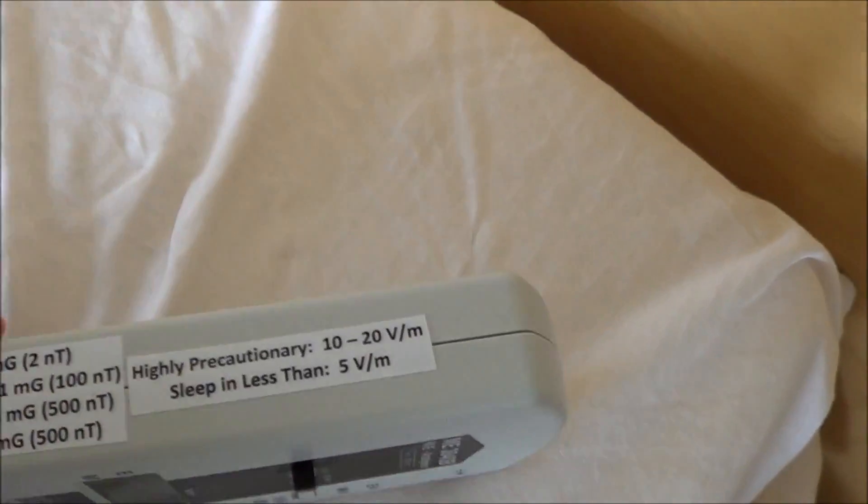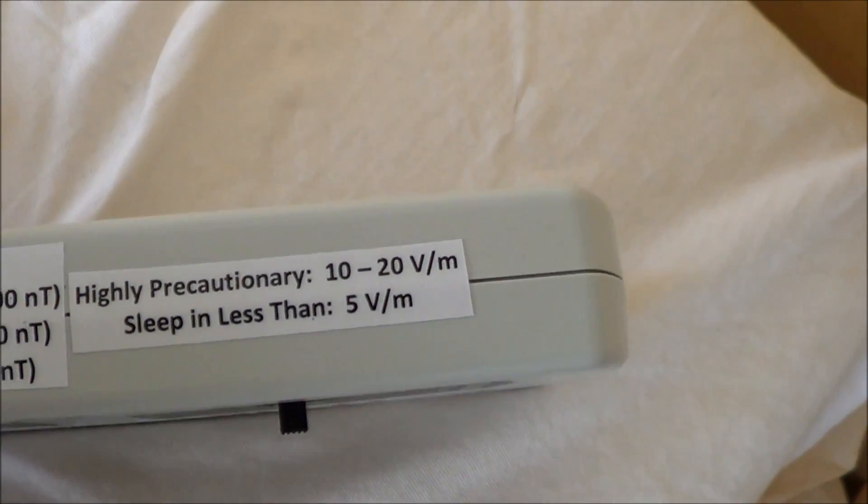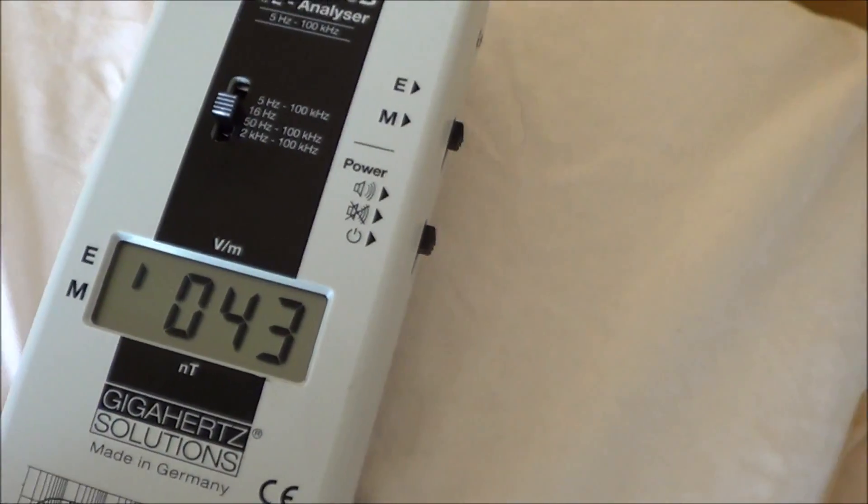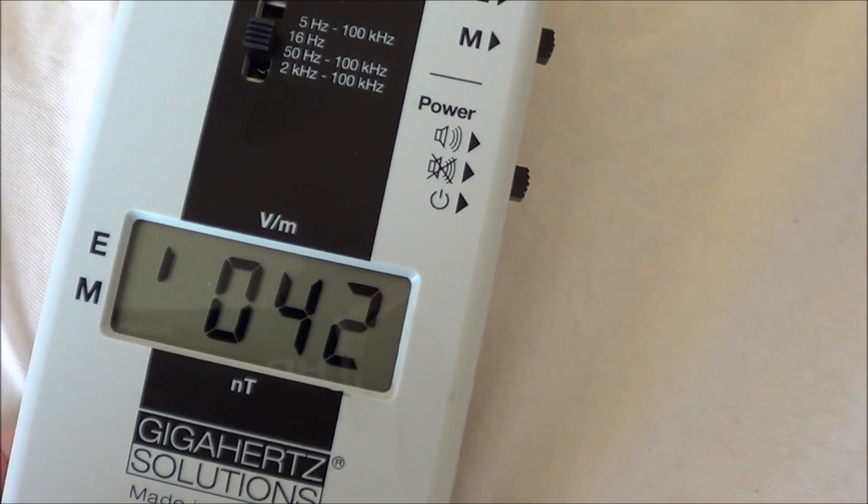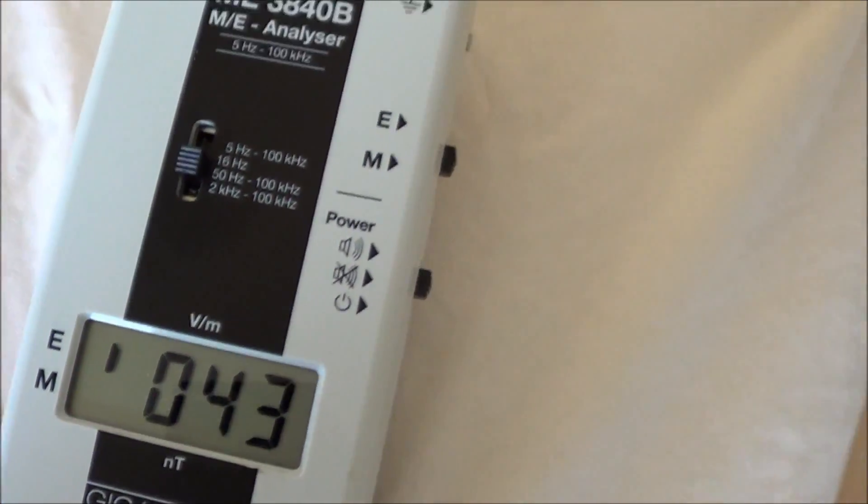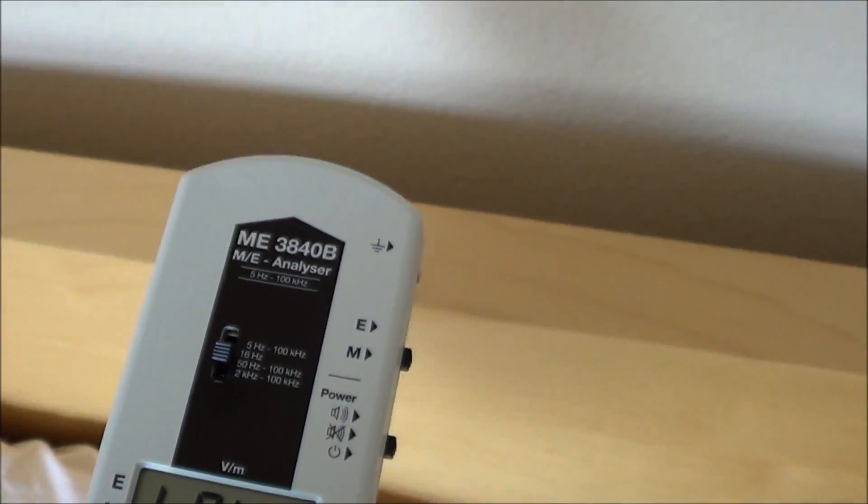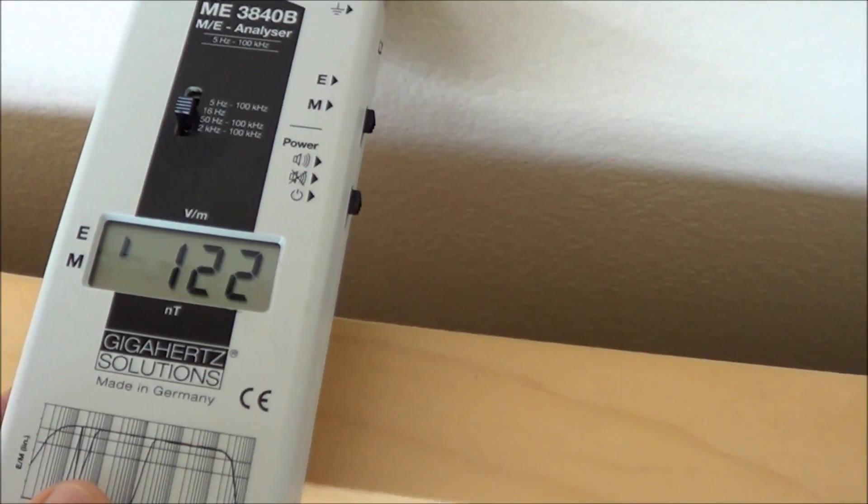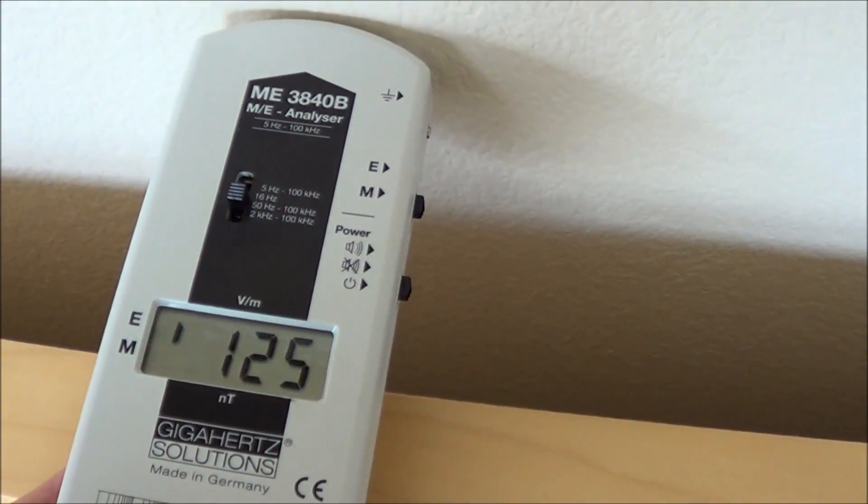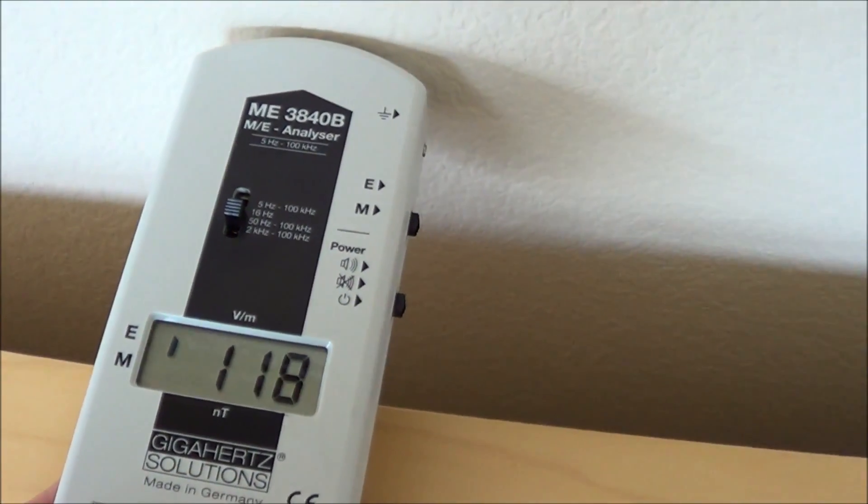And once again, as a reminder, it's suggested to sleep in less than 5 volts per meter. And this reading, as you can see, where it says VM, that means volt per meter because we're measuring the electric field. And here's what happens once again when we get it near the wall. 125 volts per meter from the electrical wiring.